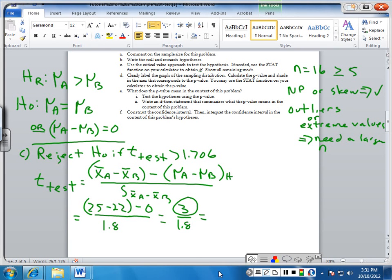The difference between the two sample means is 3. And I get 1.67, which is not greater than 1.706. So we fail to reject HO. And we conclude mu A could equal mu B. So that's part C.